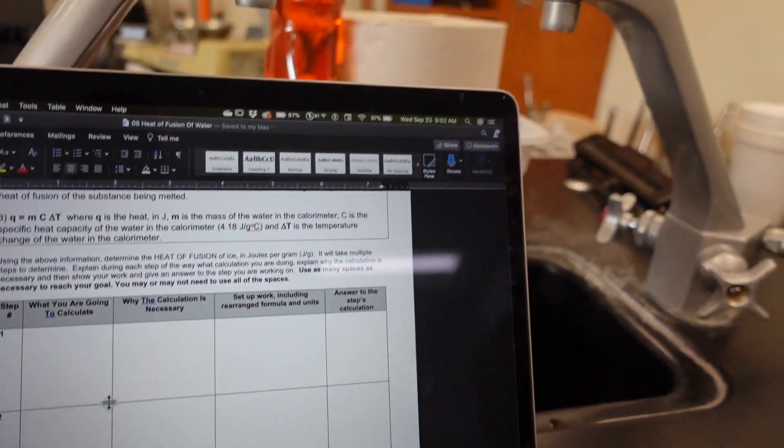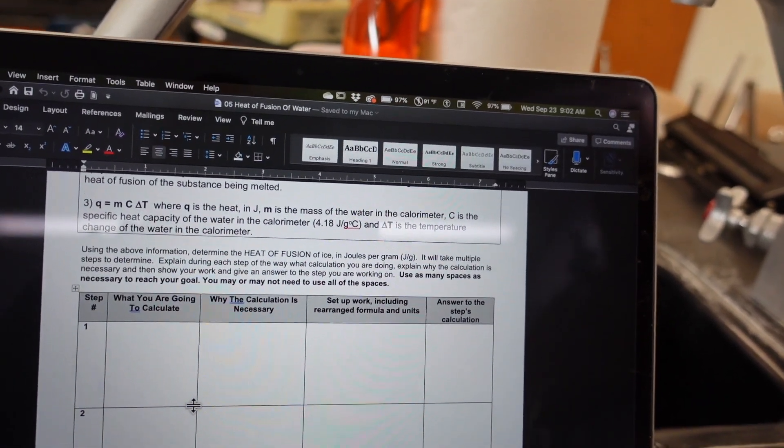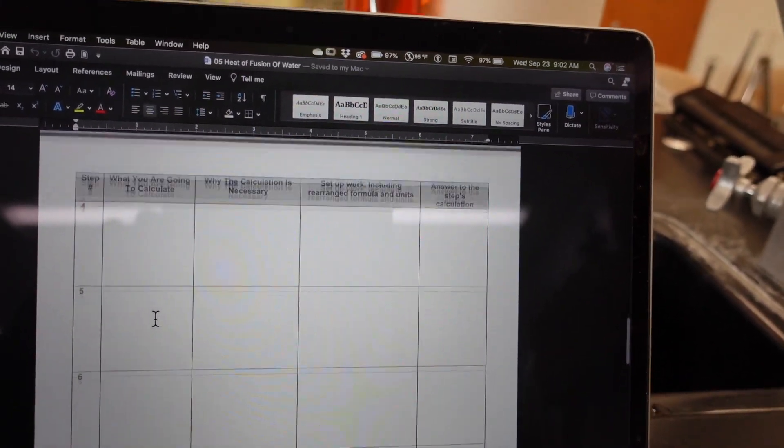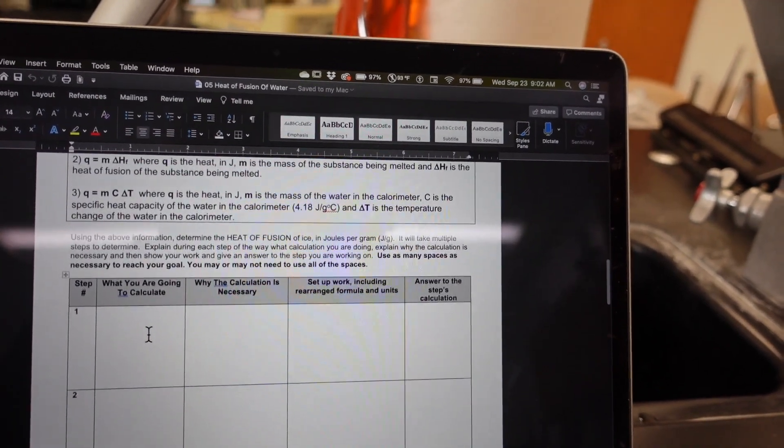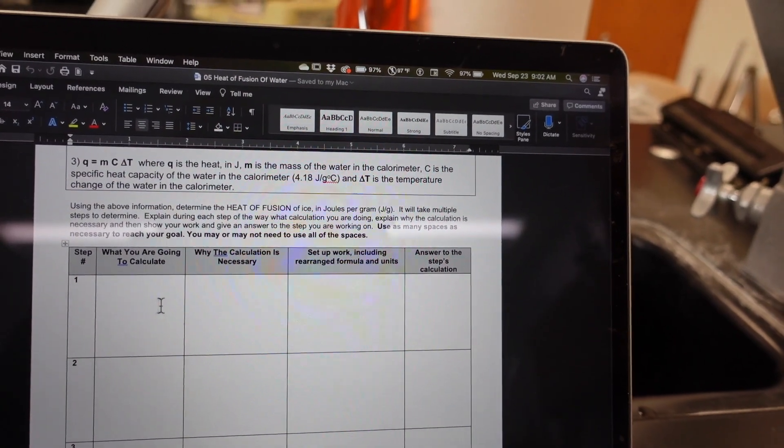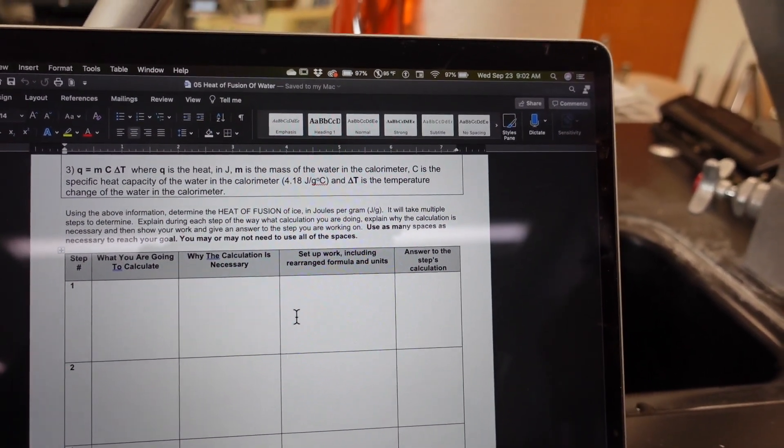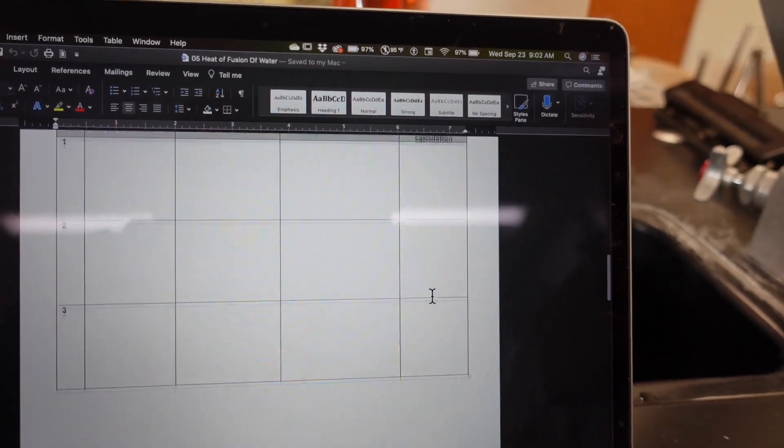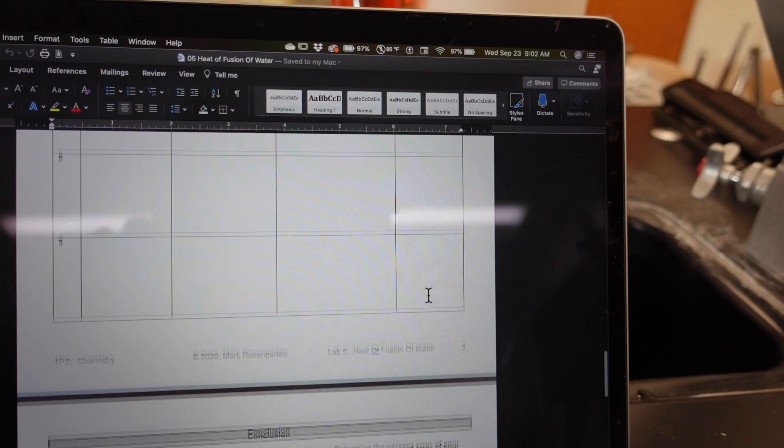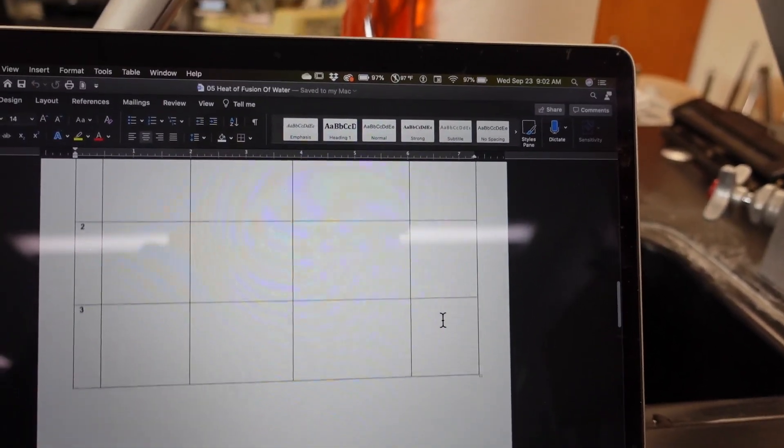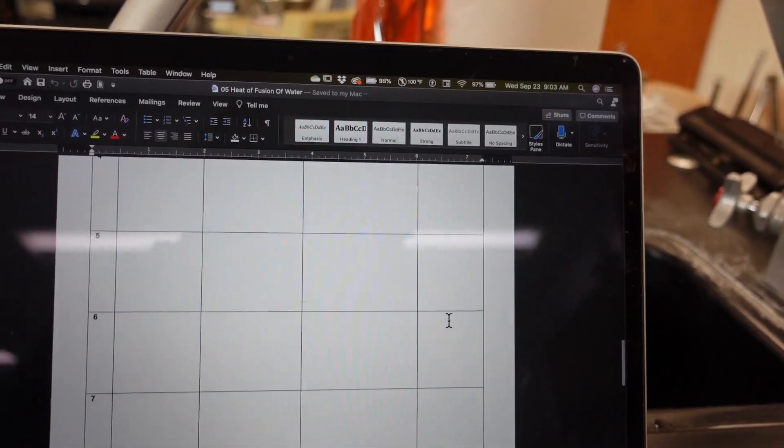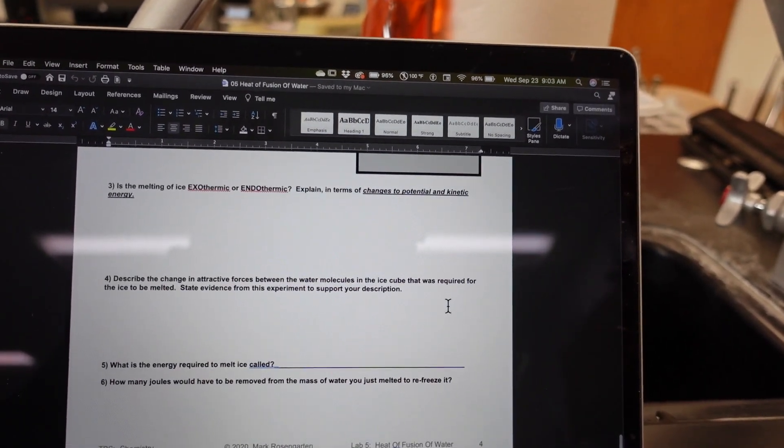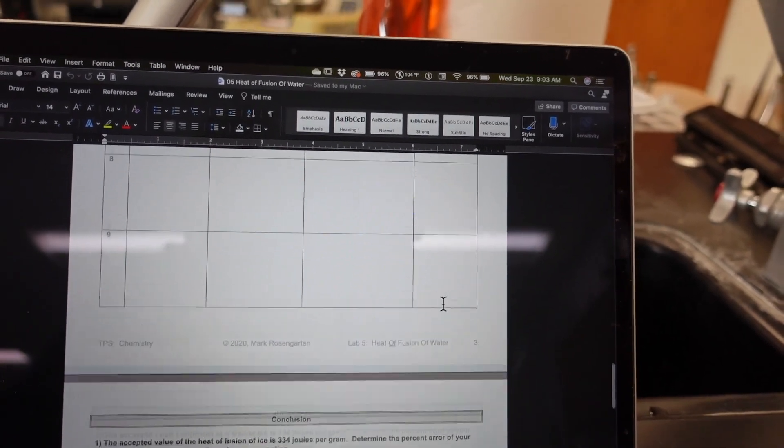You're going to calculate the heat of fusion of ice. Now I give you some information here on how to do it. What you're going to do is put down all the calculations you're going to need in order to achieve that goal: the heat of fusion of ice in joules of heat per gram of ice. So what are you going to calculate, why is it necessary to calculate it, show all your work, and then the answer properly rounded with the unit. The last calculation that you do should end in joules over grams, joules per gram. When you're done with that, there are some additional conclusion questions to answer. So go ahead and just answer those and then you'll be all set.